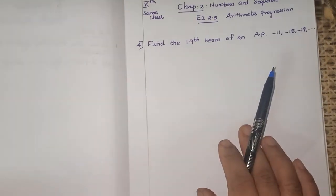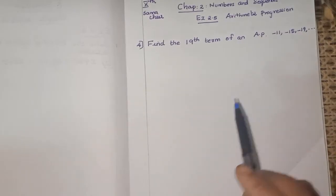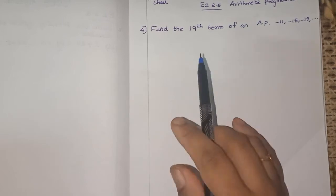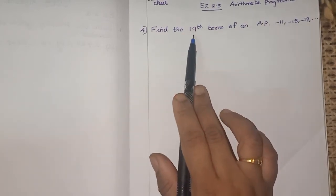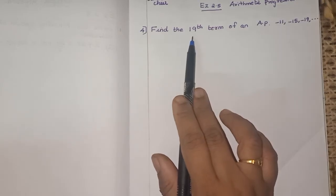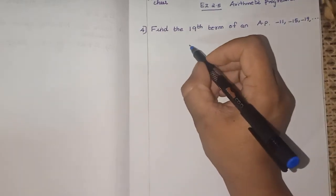So AP means how to find the nth term. The formula is there. You have to remember the formula. Find the 19th term means what? 19 means N is given. So first you have to write the formula for nth term. What is the formula?